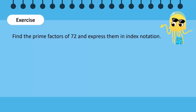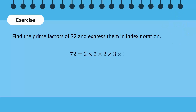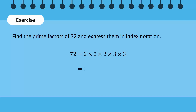Let's test ourselves. Take a moment to find the prime factors of 72 and then express them in index notation. By successive division or factor tree method, we get these prime factors of 72. Observe that the number 2 is repeated 3 times and number 3 is repeated 2 times. Hence, we can write 2 cubed times 3 squared.